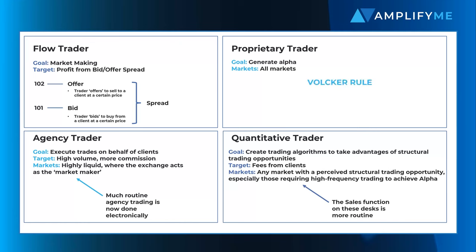Proprietary trading involves banks using their own account to make certain types of speculative investments. In the wake of the 2008 global financial crisis, the Volcker Rule restricted certain trading activities which would cause a conflict of interest with bank clients or present a material risk to wider banking operations. It is important to note that banks are still allowed to hold securities as part of their essential market making activities.